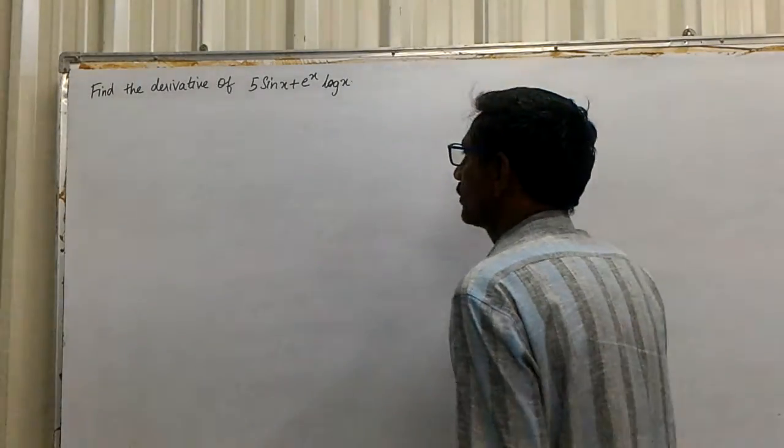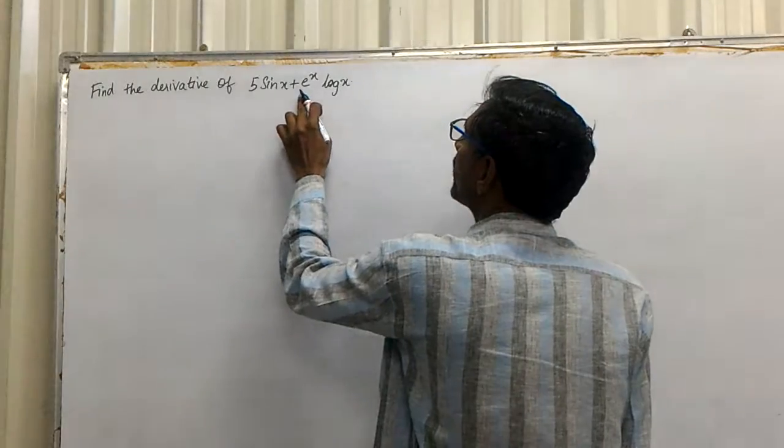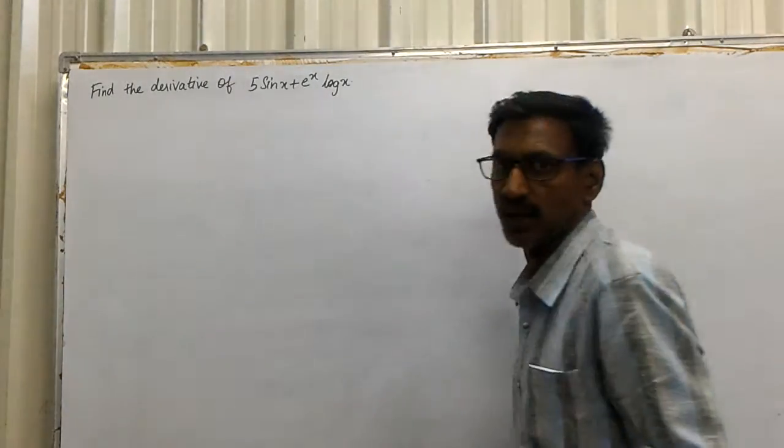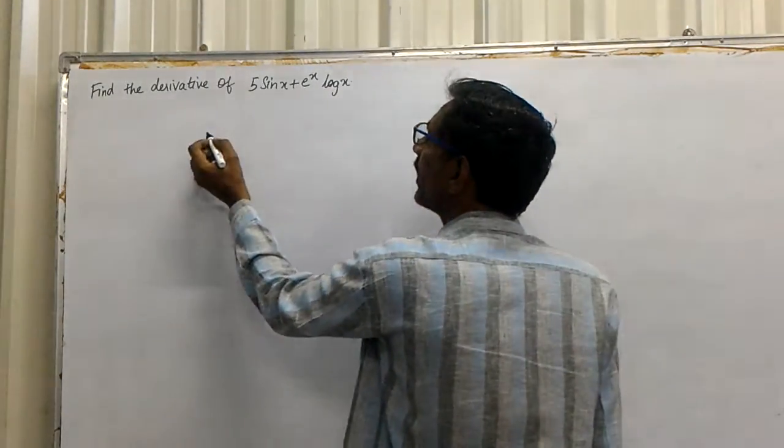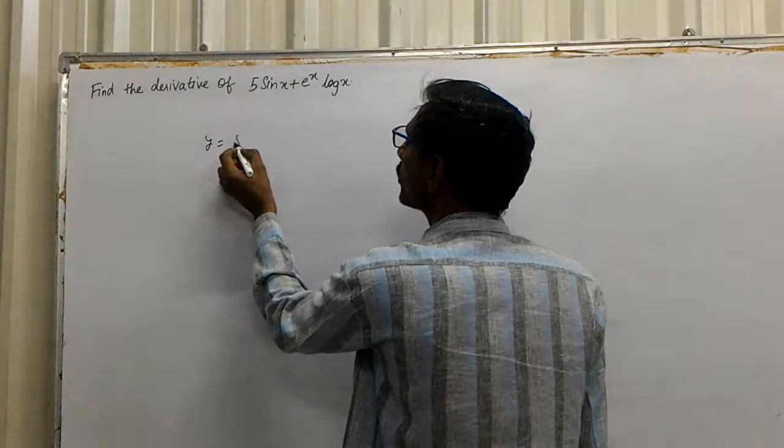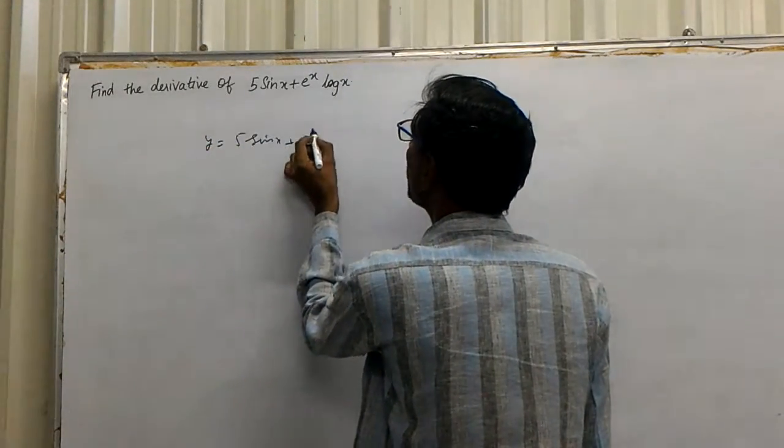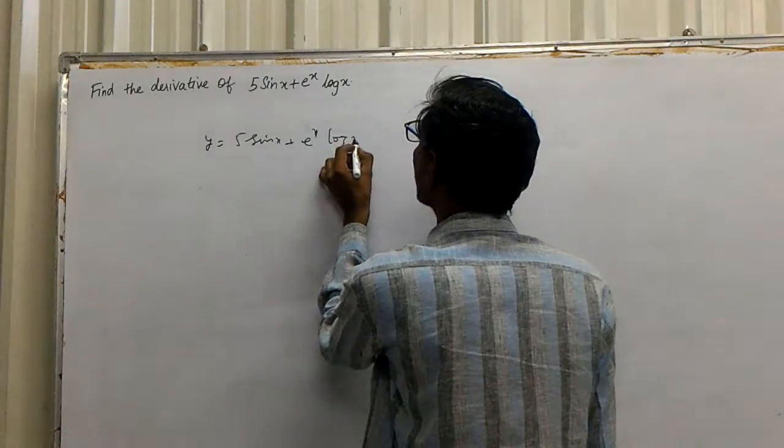Find the derivative of 5 sin x plus e to the power x into log x. First, we will write this correctly. y equals 5 sin x plus e to the power x into log x.